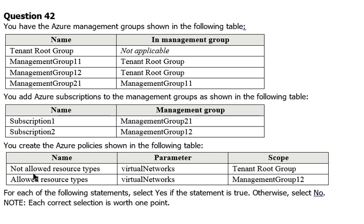You create the Azure policies shown in the following table. The first policy is 'not allowed resource type: virtual networks,' applied on the top root group. The second policy is 'allowed resource type: virtual networks,' applicable on management group 1.2.